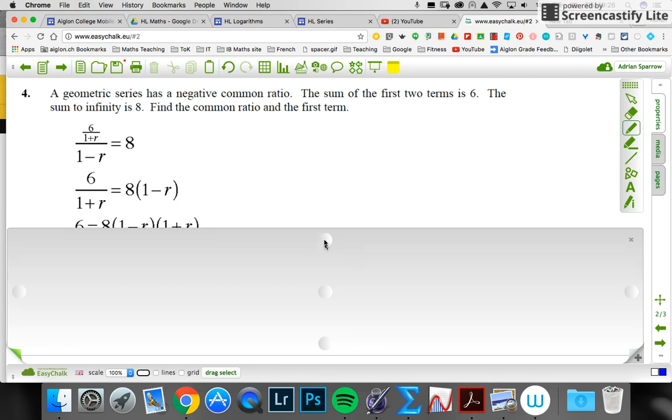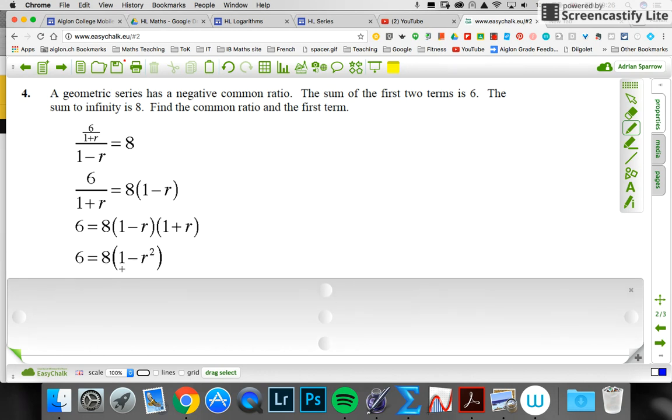This will simplify to give me a quadratic equation. One minus r squared. I'm now going to expand the bracket, so I get eight minus eight times one minus r squared.